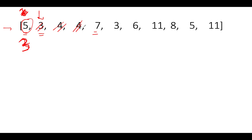Next we see 7. 7 happens to be greater in value than 5, so we are pretty good. Let's update the count here to 0 and continue. Again, the next element is 3 - 3 is lower than 7, so we have to delete it. The count gets updated to 1. Next we see 6 - 6 is again lower than 7, so the count gets updated to 2. Next we see 11 - its value is greater than 7, so we reset it. We will start the operation again from here and the value gets updated to 0.